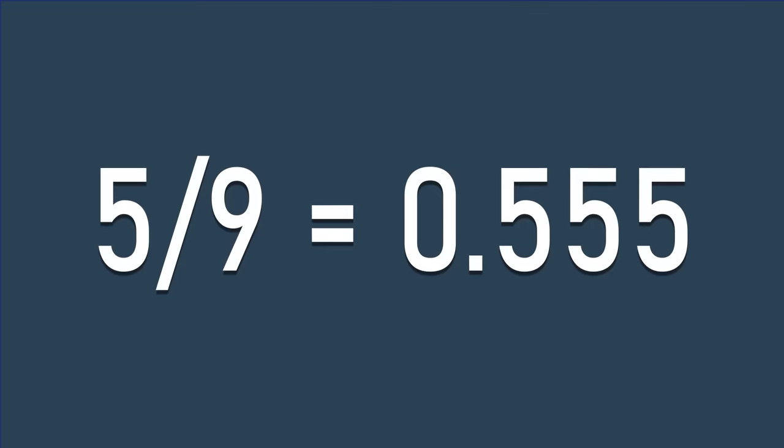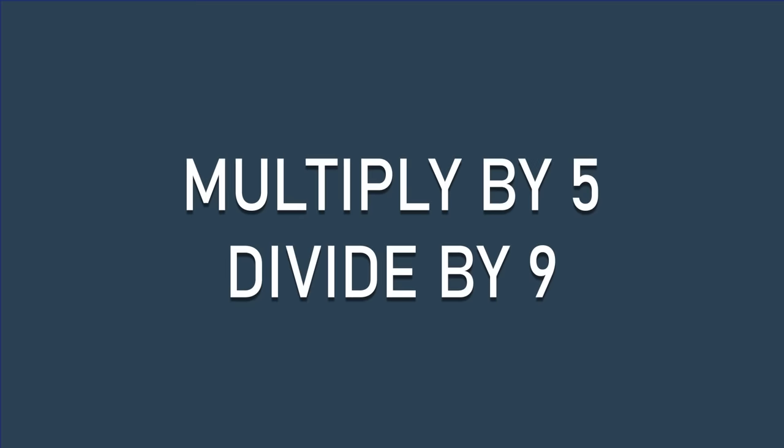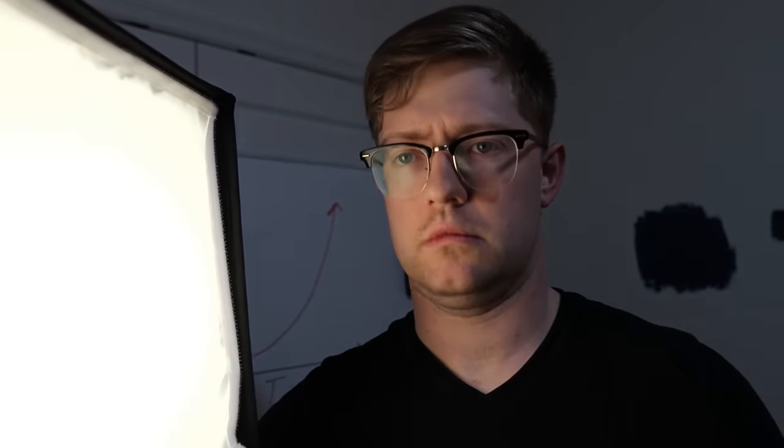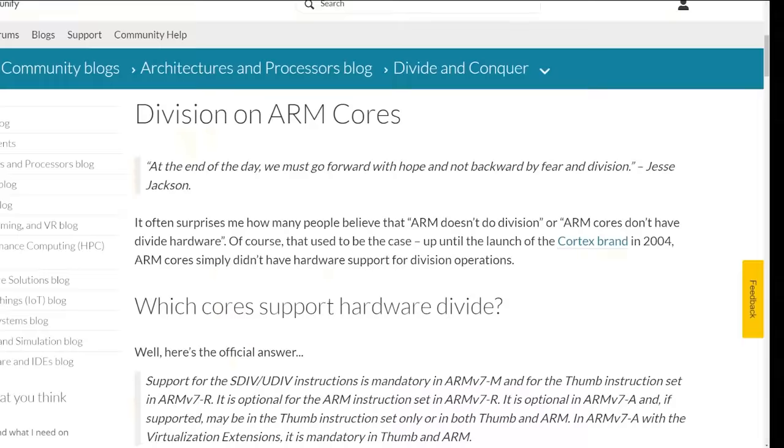Instead of treating 5 over 9 like a fraction, I decided to treat it like two separate operations: first, multiply by 5, and then divide by 9. Finally, the light at the end of the tunnel was beginning to show — and this is where the story takes a slight turn.